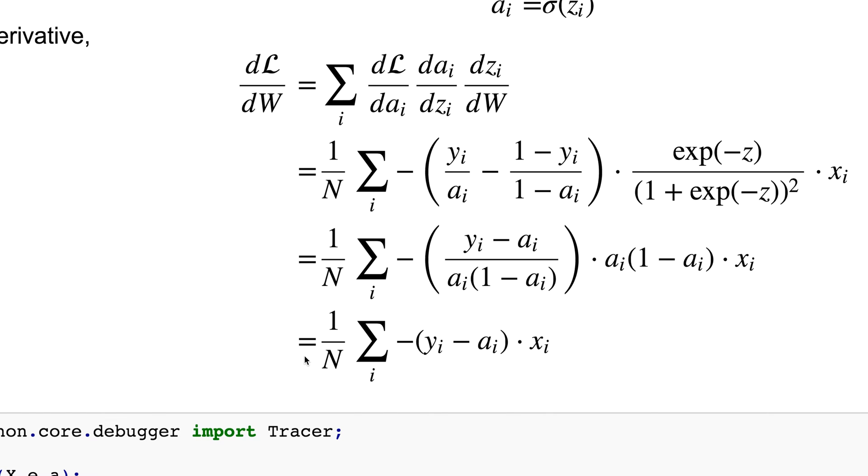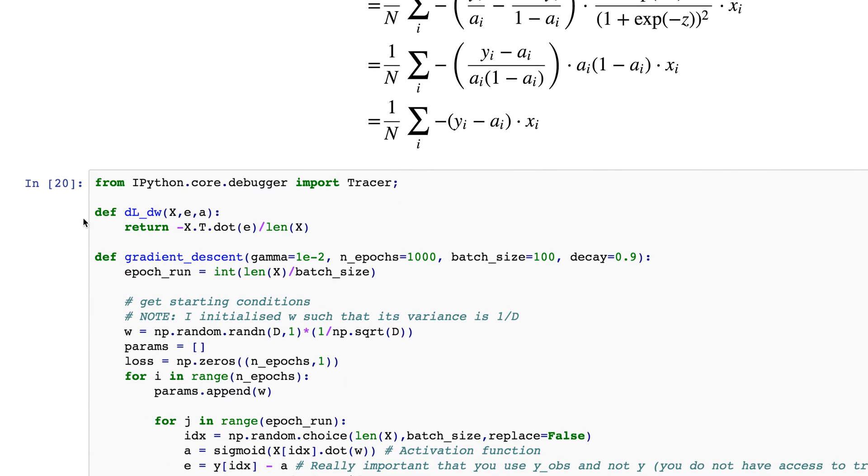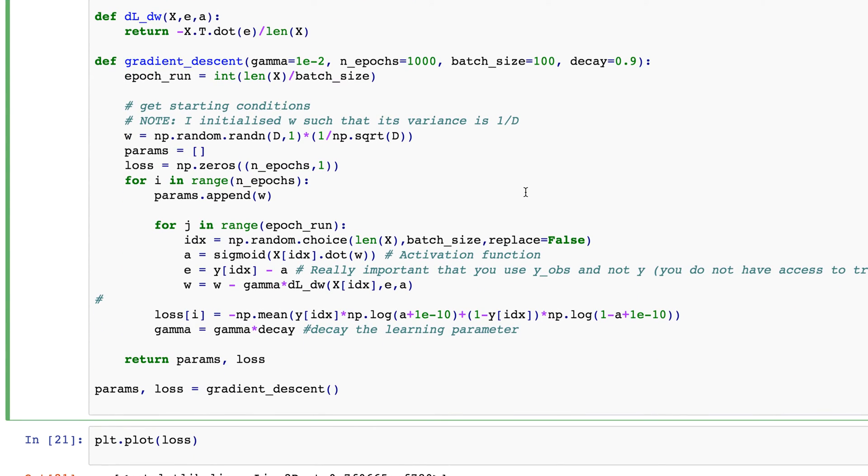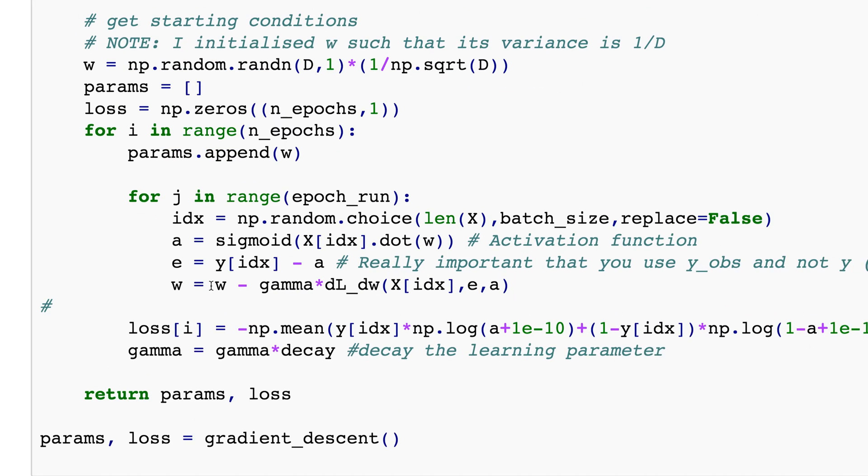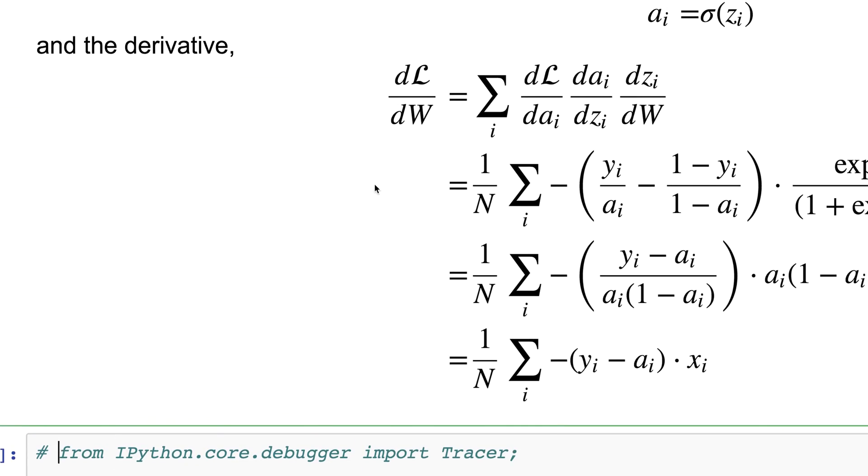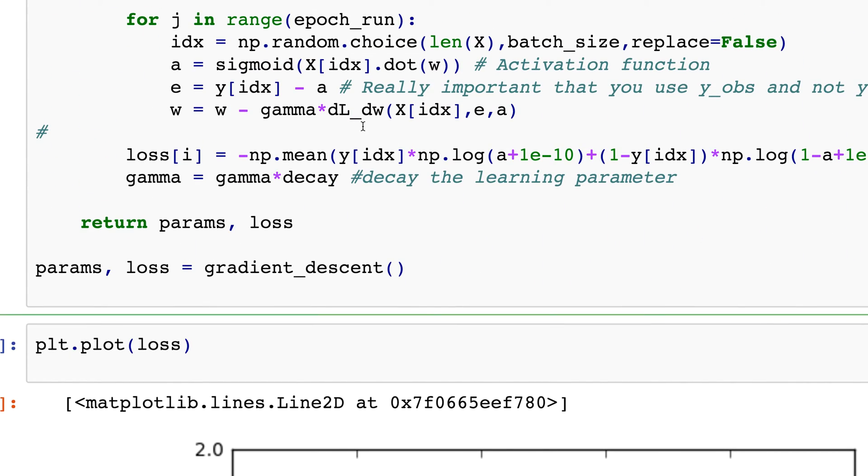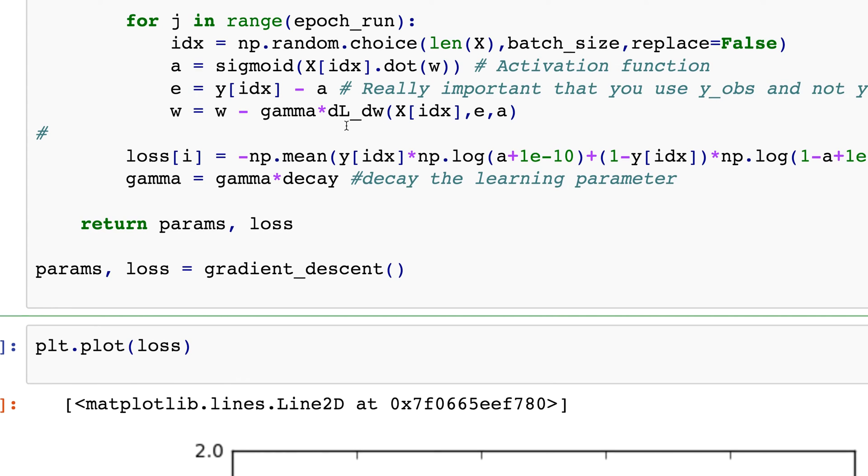Okay, so we end up with this as being our final derivative. And if you remember my last lecture, we're going to be using stochastic gradient descent to get the final w's, I suppose I should say. Um, so yeah, so again all I'm doing is updating my w's going w equals w minus my learning rate multiplied by this dL/dw.